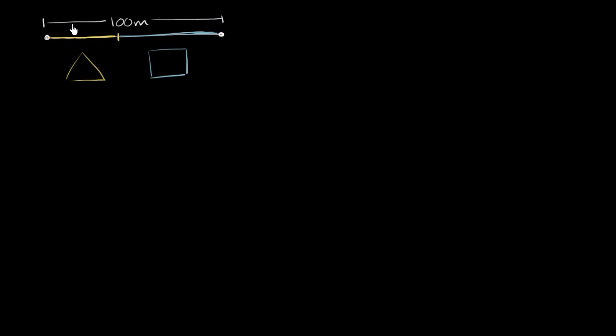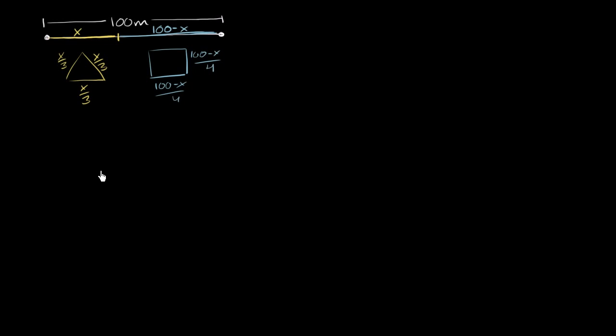Let's say that the variable x is the number of meters that we decide to cut from the left. Then this length for the triangle would be x meters, and the length for the square would be 100 minus x. The triangle sides are going to be x/3, x/3, and x/3 — it's an equilateral triangle. And the square is going to be (100 minus x)/4 by (100 minus x)/4.